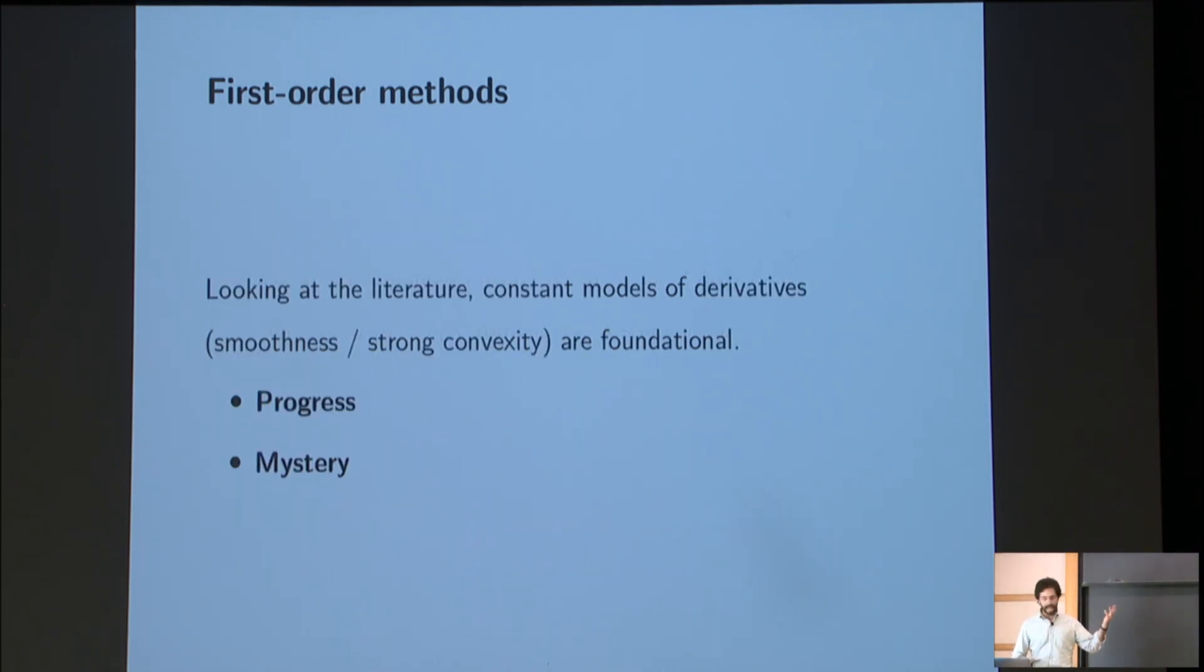And then not far thereafter, Nesterov famously matches this bound with his accelerated gradient method. OK. And so since that, the sort of rest is history. Convex optimization is littered with these matching upper and lower bounds. And if you look at a lot of the literature, this idea of modeling functions with constant models of their derivatives of some order, which corresponds to this idea of smoothness and strong convexity that we just talked about, this idea of constant models of derivatives are essentially foundational.